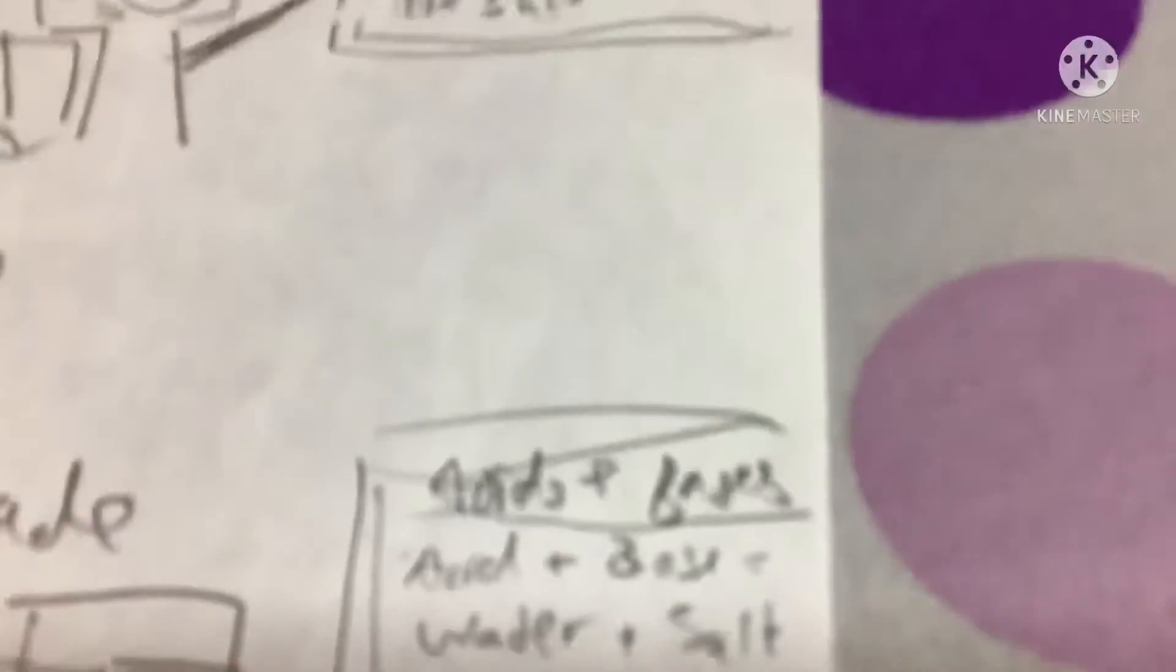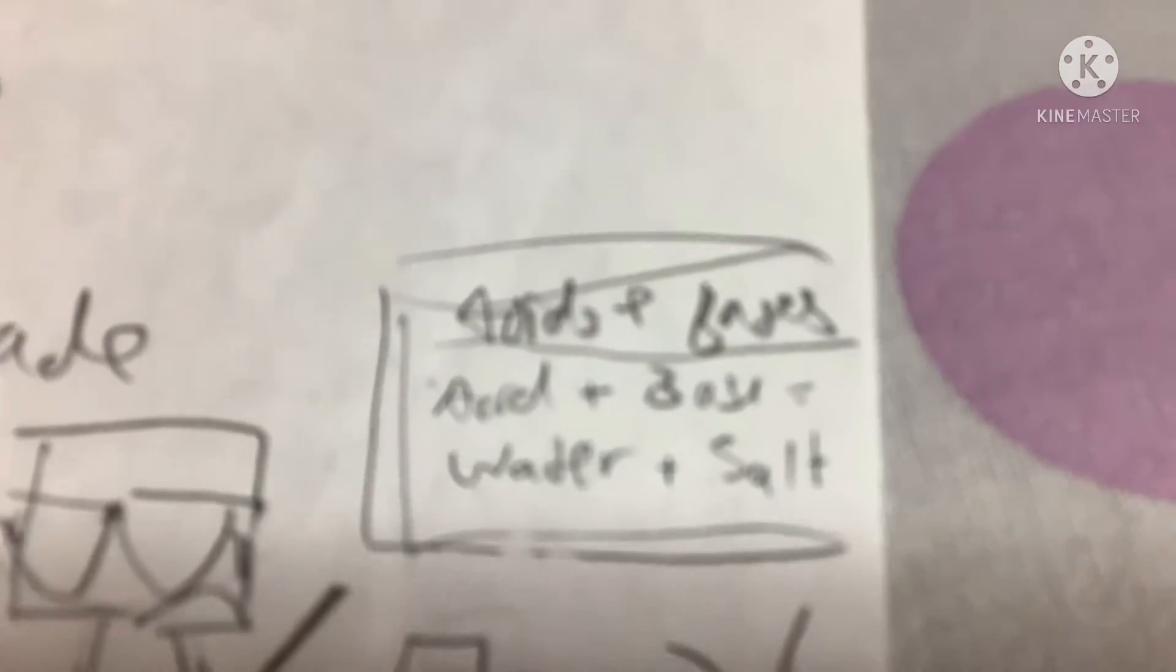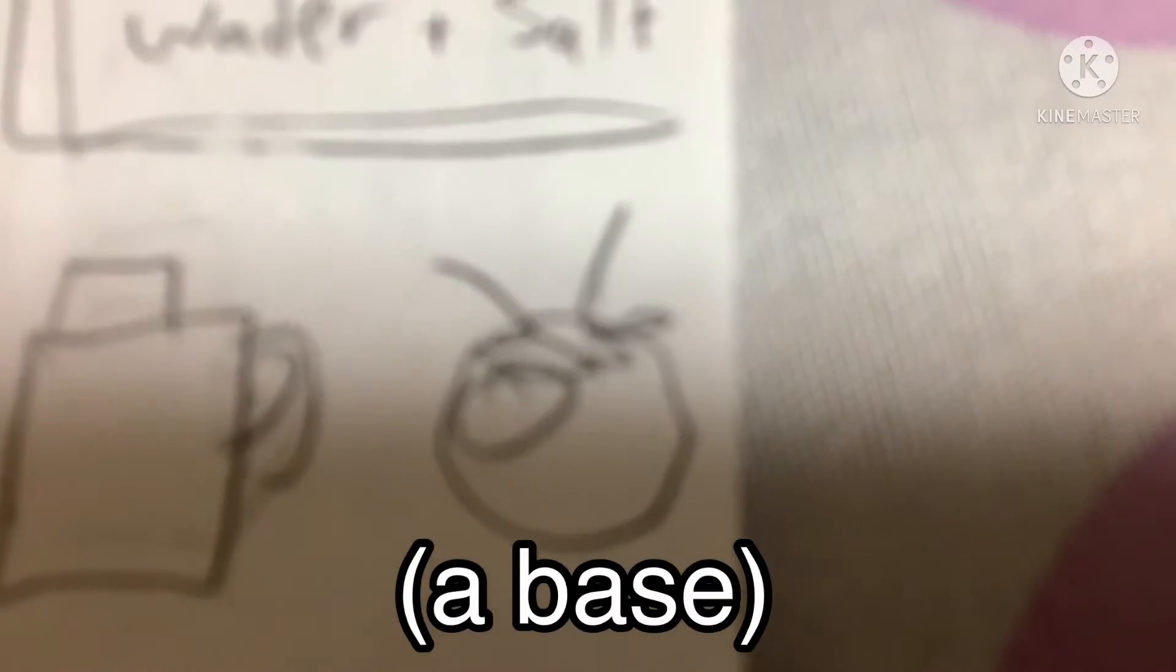Hello guys, today we are going to learn about acids and bases. Basically acid and base makes water and salt cause they're just charged ions. So basically, if you're a child in the future and you have acid rain, you can just use a detergent.